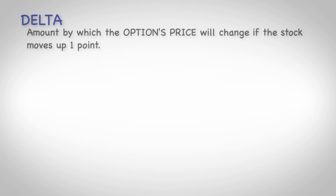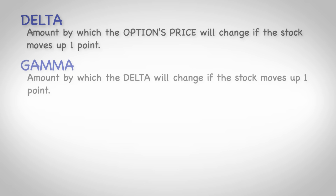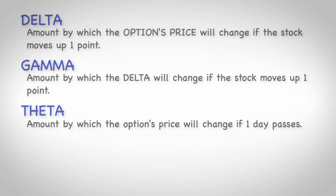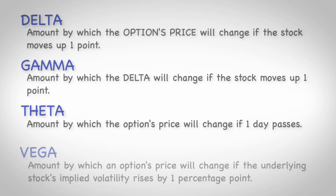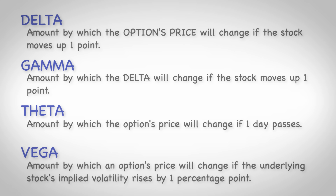So those are the four main option greeks: Delta is the amount by which an option's price will change if the underlying stock price rises by one point. Gamma is the amount by which an option's delta will change if the underlying stock price rises by one point. Theta is the amount by which an option's price will change if one day passes. And vega is the amount by which the option's price will change if the underlying stock's implied volatility rises by one percentage point.